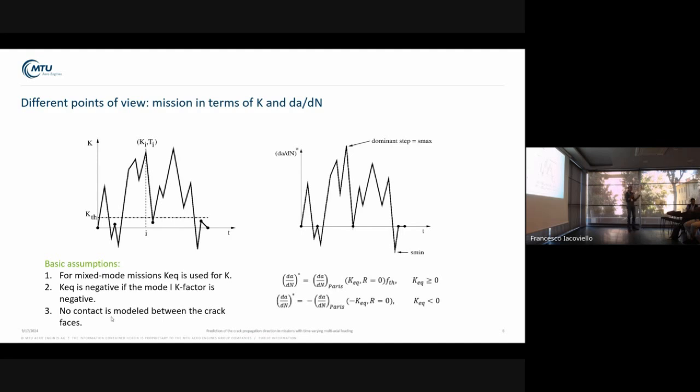How do we derive from n deflection angles or n data points, one angle for the complete mission? Here you see two different representations. On the left, you see how the K factor, the equivalent K factor, changes over time. The temperature also changes over time.